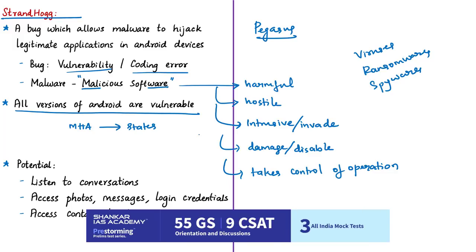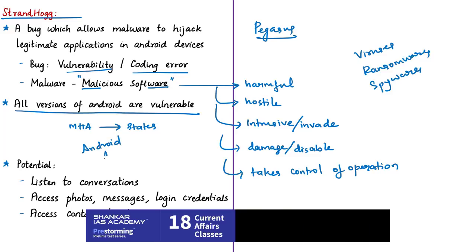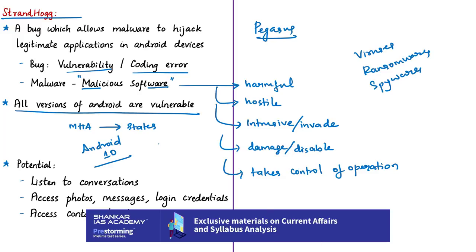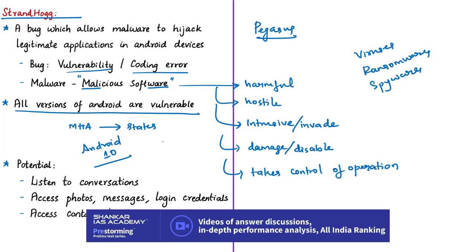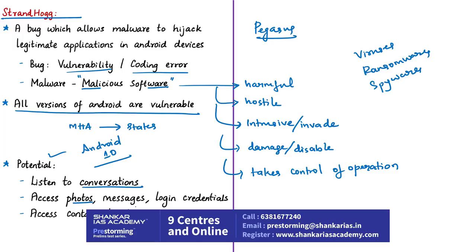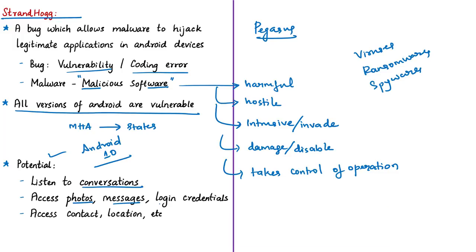All versions of Android, including the latest Android 10, are vulnerable to the StrandHog bug. The worst part is that most affected users do not even know that malware applications are already in their device posing as genuine applications. Such malware can listen to conversations, access photo albums, read or send messages, make calls, record conversations, obtain login credentials for bank accounts or Gmail, and access private images, files, contact details, call logs, and location information.